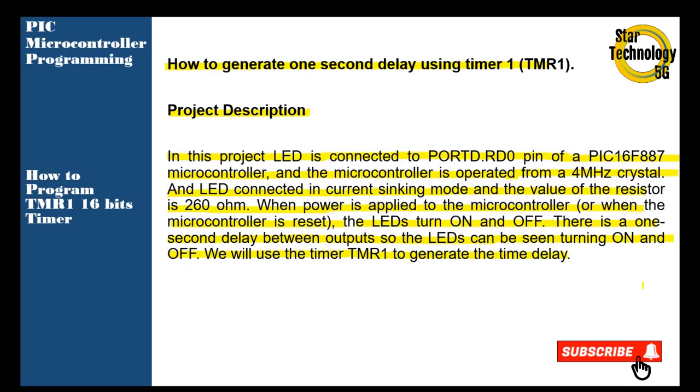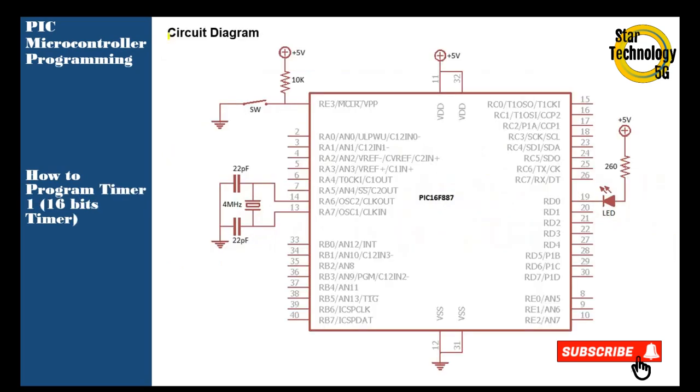We will use Timer 1 to generate the time delay. Circuit diagram: Here is the PIC16F887. Pin number 1 is the master reset. Pin numbers 14 and 13 interface with the 4MHz crystal, and we are using 22pF capacitors. RD0 pin interfaces with the LED, and we are using current sinking mode. The value of the resistor is 260 ohms. Now we will draw its circuit in Proteus, and after that we will write its code in MPLAB.